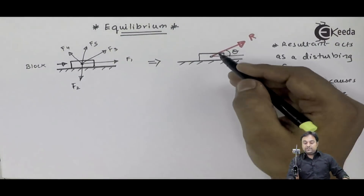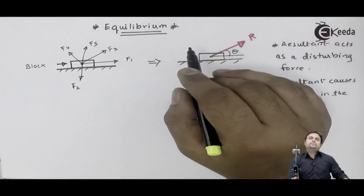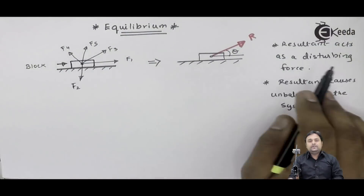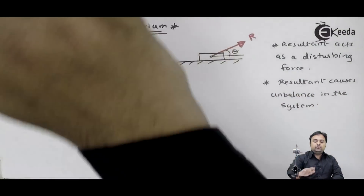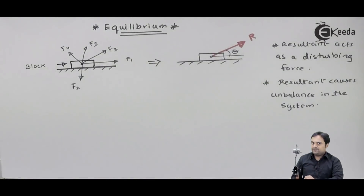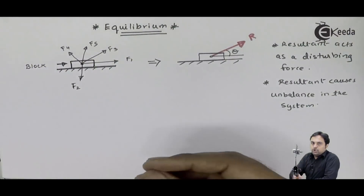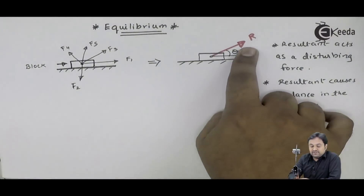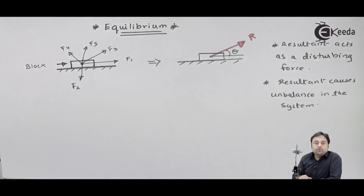Because of the resultant, this system will remain unbalanced. That is, if this block is stationary, it will start moving. If we want to eliminate this unbalanced force, if we want to remove the resultant — that is, we want to avoid the disturbance of this block — then we have to introduce one new force which will cancel the effect of resultant, and that new force which cancels the effect of resultant would be called as equilibrium force.